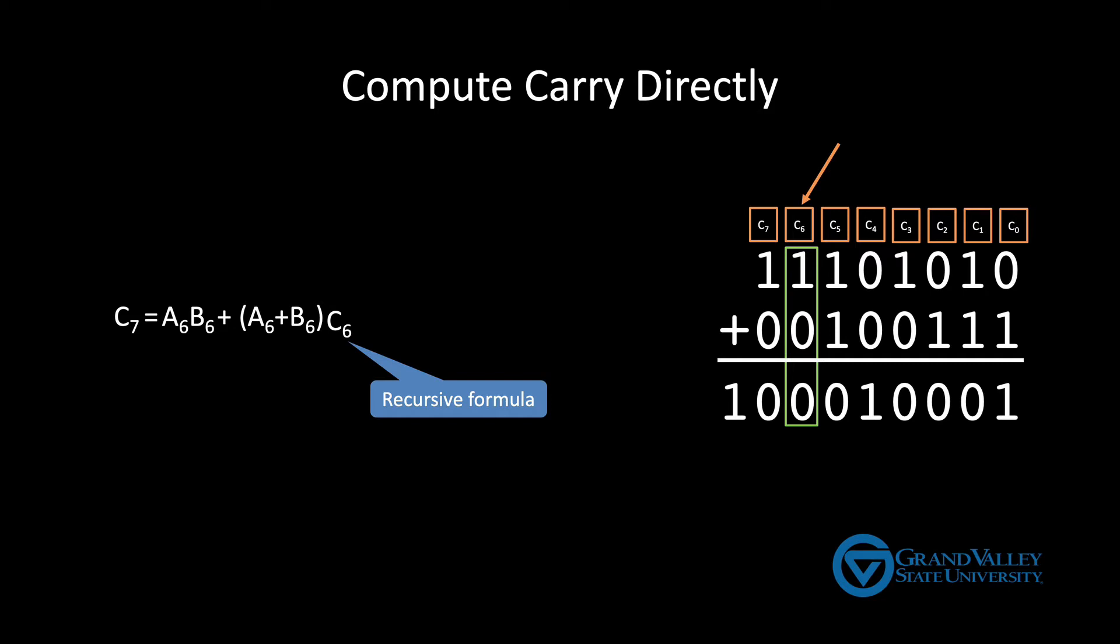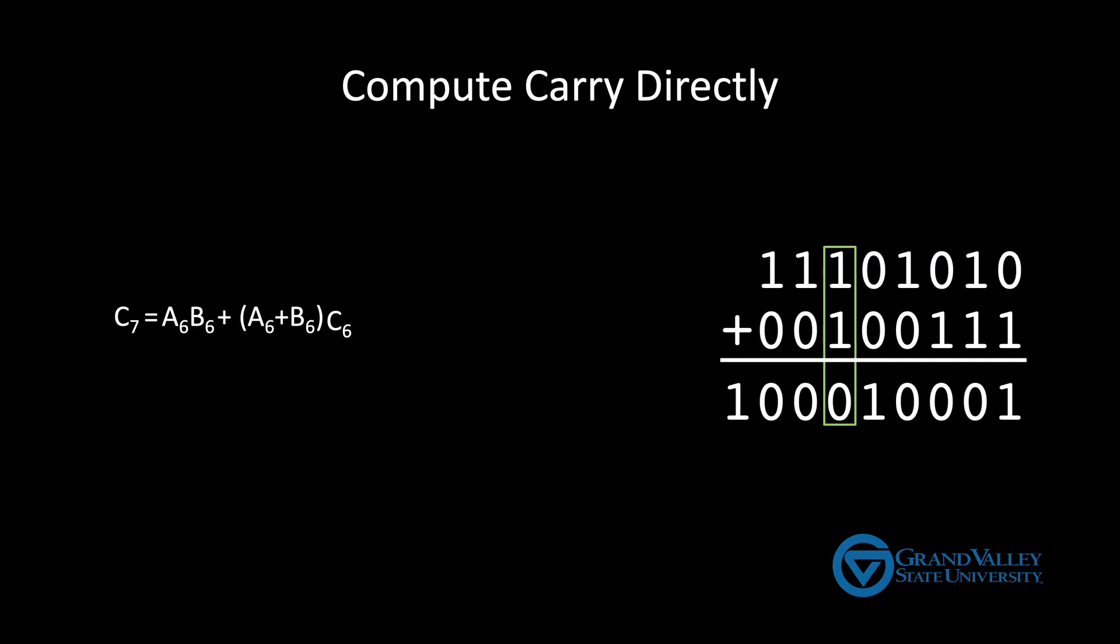All right to more easily understand this formula, both the recursive version here and the non-recursive version we're going to build, let's classify the columns into three groups. If both inputs in a column are ones, we say that that column generates a carry. We say it generates a carry because there will always be a carry out of this column. So in some sense columns like this create or generate a new carry.